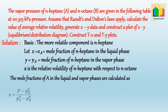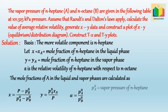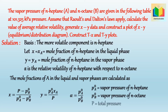X equals (P minus P_B°) divided by (P_A° minus P_B°). Y equals (P_A° times X_A) divided by P. And the relative volatility, alpha, equals P_A° divided by P_B°. Where P_A° is the vapor pressure of N-heptane, P_B° is the vapor pressure of N-octane, and P is the total pressure.